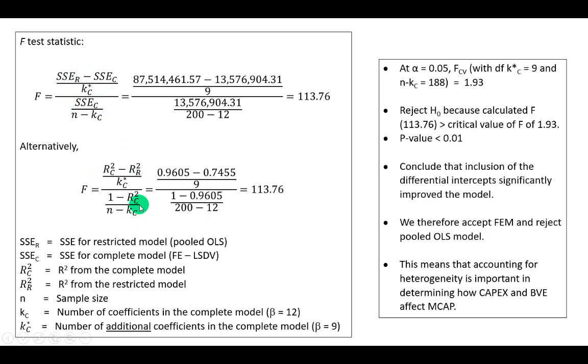as a result of the introduction of the dummy variables, have we been able to significantly reduce the previously unexplained variation as to prefer the least squares dummy variable fixed effects model over the pooled OLS model?